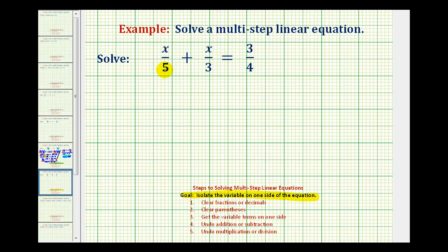If we want to clear the fractions, we want to multiply both sides of the equation by the least common denominator, looking at our fractions with a denominator of five, three, and four. This is the same as determining the least common multiple of five, three, and four.